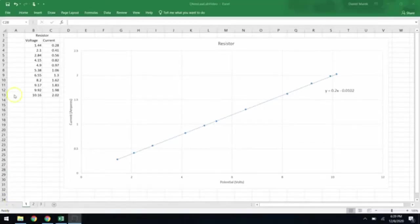So looking at the data that we collected, I've got the voltage here on the left side and the current here on the right side. And you can see that when I graph the current as a function of the potential difference, the voltage drop, I get this really nice, beautiful straight line that has a slope of 0.2.